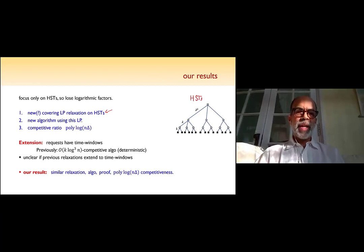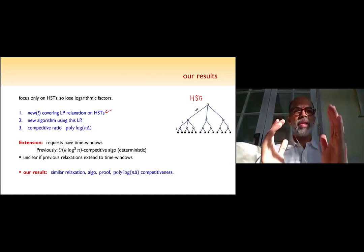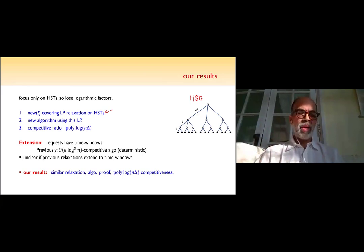So what am I going to briefly talk about is a new, possibly a new—we couldn't find a reference to this, but it's connected to things we know—a covering relaxation for the problem on these kinds of trees, hierarchically well separated trees. These are HSTs. Using this covering relaxation will give a new algorithm, which has a poly-log competitive ratio in some of the parameters. It's not the best known by any means. But the fact that we are using a covering relaxation is new. The previous paper of Sebastian and others—Bubeck, Cohen, Lili, and Madri—was using a relaxation which wasn't a covering problem.